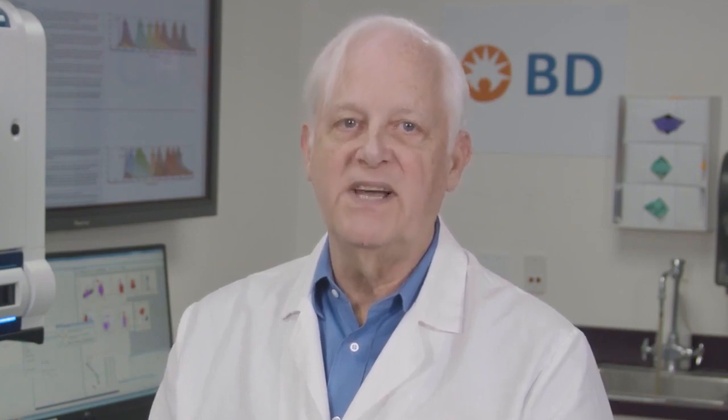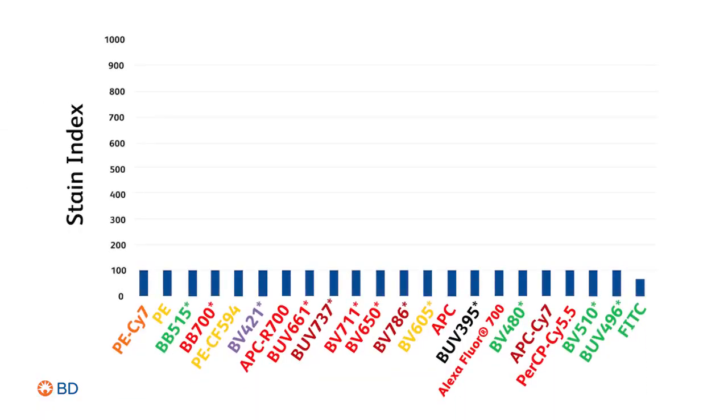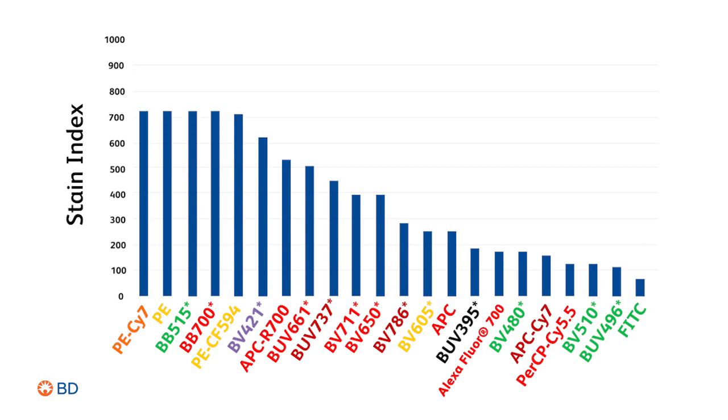Once you have determined the correct gain settings for your cytometer, you can determine the relative brightness — that is, the resolution provided by all the fluorochromes available for that cytometer. Here, you can see the ranking of fluorochromes showing the stain index of cells stained with different anti-CD4 reagents on a 5-laser, 18-parameter analyzer. This information can prove valuable for pairing fluorochromes with antigens when designing your panel.